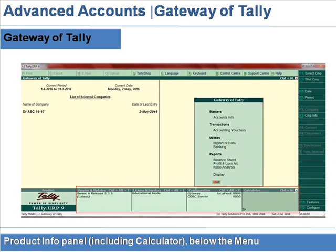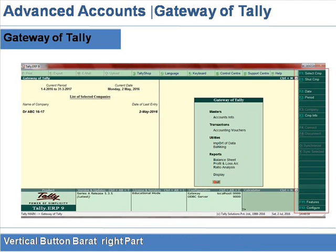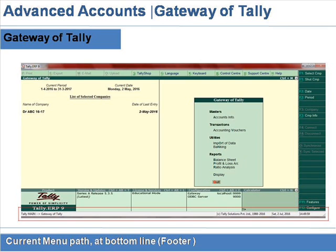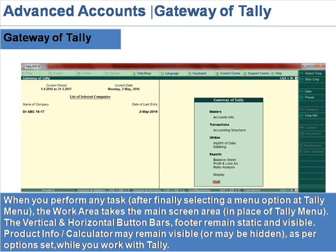The product info panel including calculator appears below the menu. The vertical button bar is at the right part. The current menu path is shown at the bottom line as the footer.